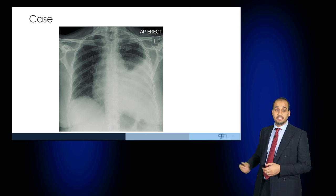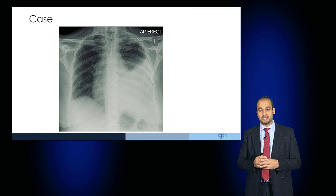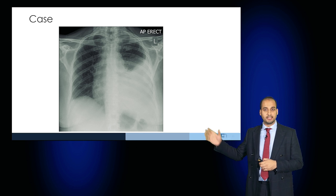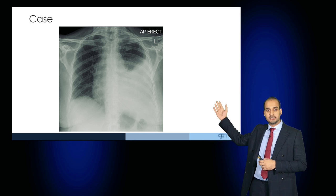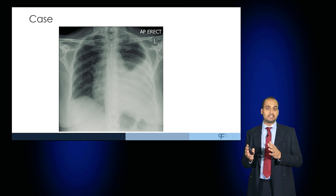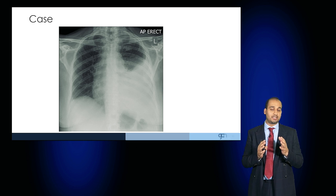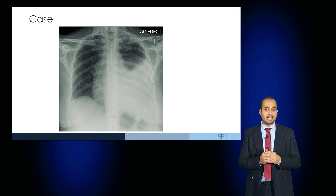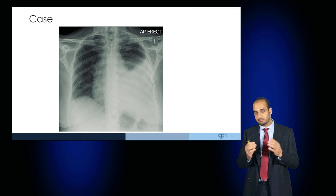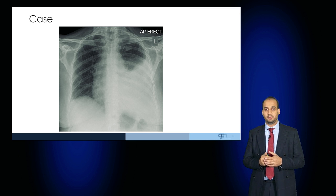Have a look at this case, which is a more advanced effusion. On the left-hand side, you can see the meniscus sign rather high up. And there is some early pushing of the trachea towards the contralateral side, suggestive that there's more than a thousand millilitres of fluid.